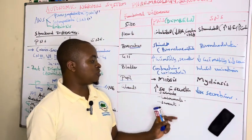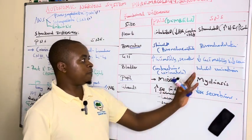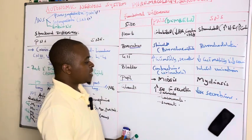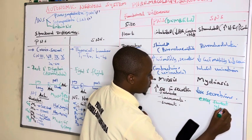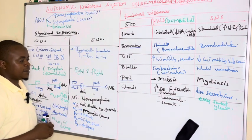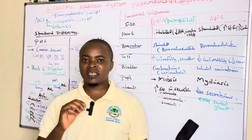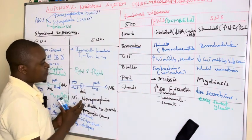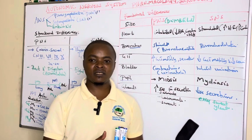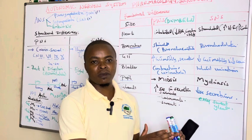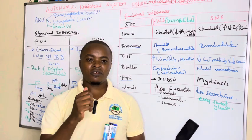The opposite is true for sympathetic: it inhibits urination, inhibits secretions, causes mydriasis (pupil widening), decreases GIT motility, and causes bronchodilation and cardiac stimulation — except that it does not inhibit sweat glands. This concludes our introduction to the Autonomic Nervous System. In the next video we will look at parasympathetic drugs used to stimulate and inhibit, then move on to sympathetic drugs. Thank you.